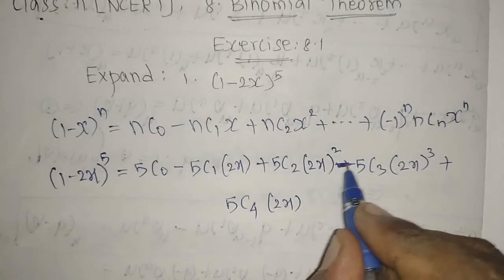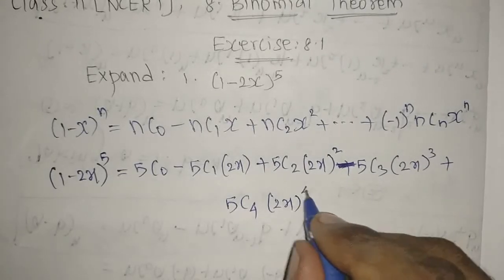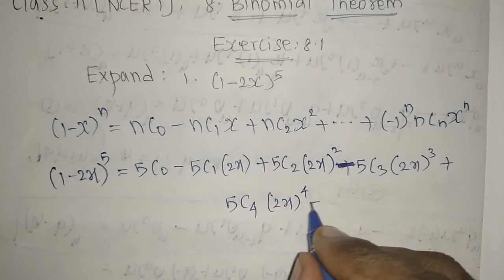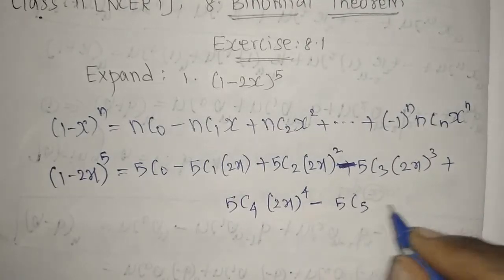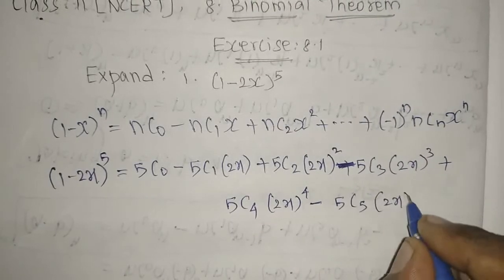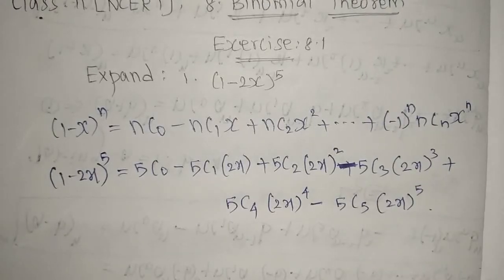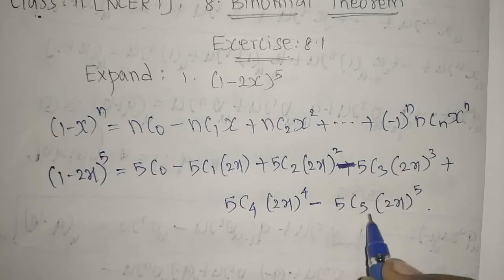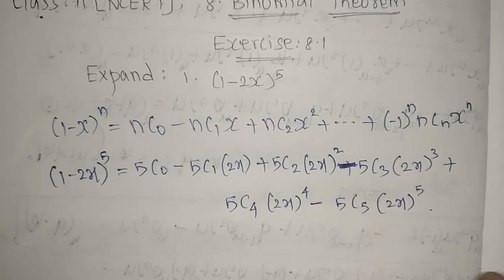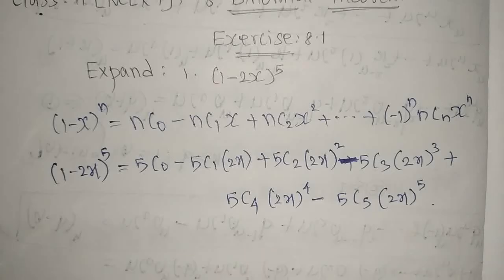Don't forget the alternating signs — we have a negative here. Then minus 5C5·(2x)^5. The process ends when both indices equal 5. Now we simplify each term to get the final answer.